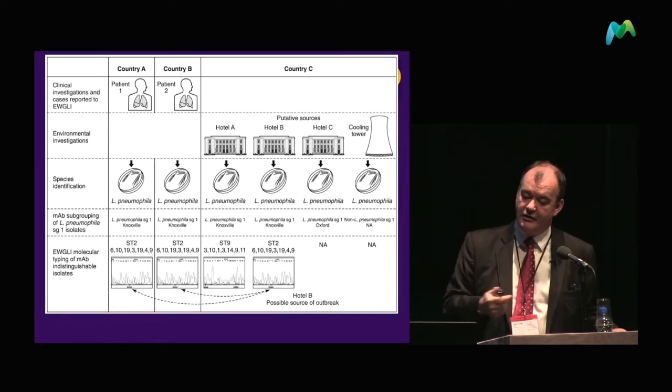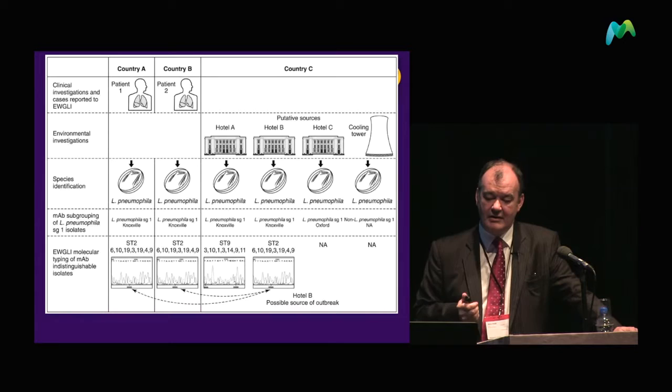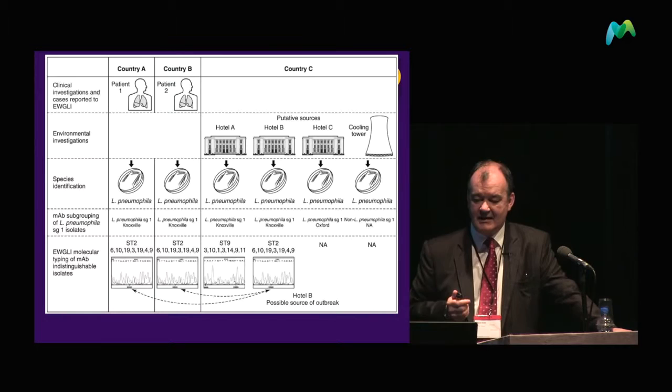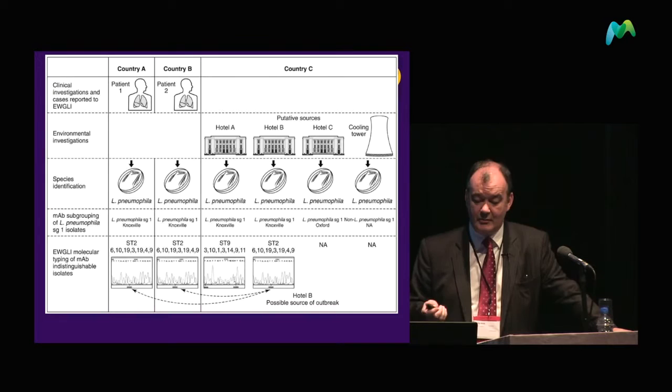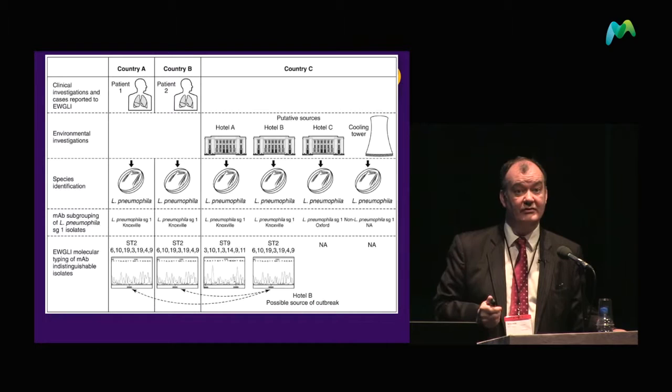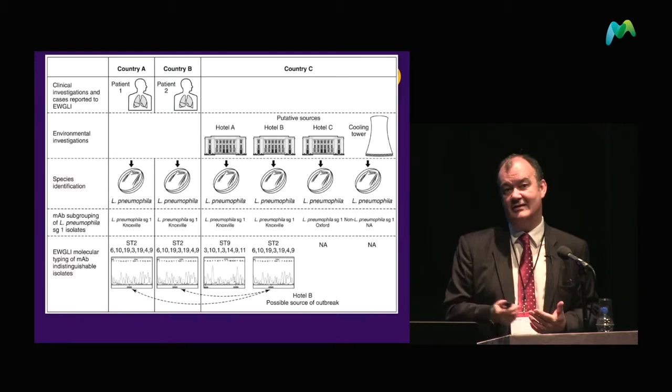Using further MAb subgrouping, we refine the examination so that by the fourth layer we can exclude Hotel C and the cooling tower — something we'd have had a real problem doing 10 to 15 years ago. Using the subtyping, we establish that Hotel A has an ST9, and we're left with the ST2 which links the two clinical cases and the hotel.